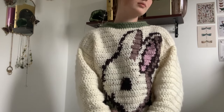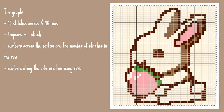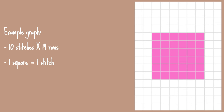So let's get into it. Starting with the graph — here we have the design I'm going to be using today. The bunny graph is 44 stitches across and 48 rows in total. To make things a little bit easier and break it down, I'm going to be showing you an example graph which is basically just a simple square design.